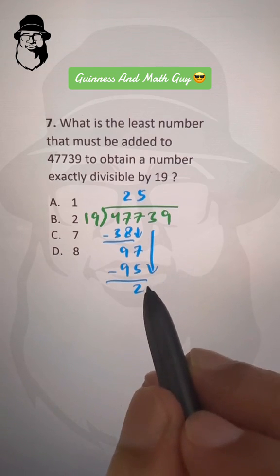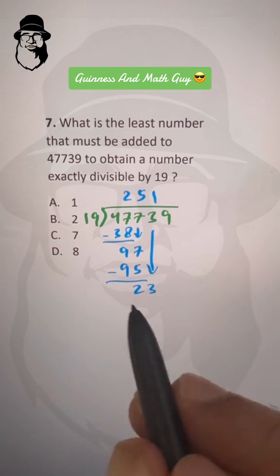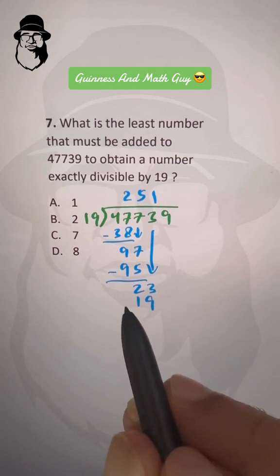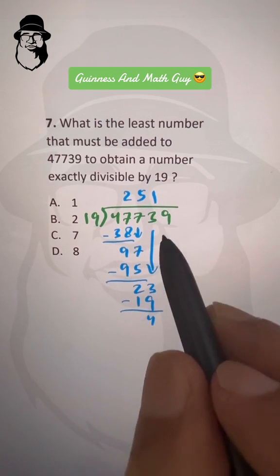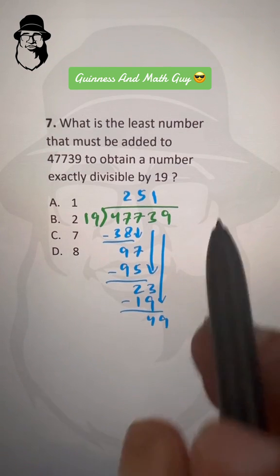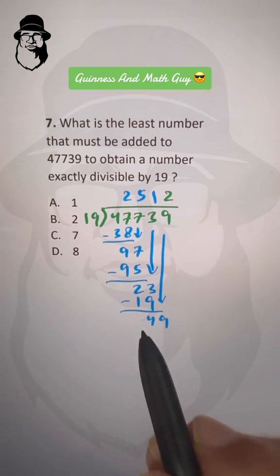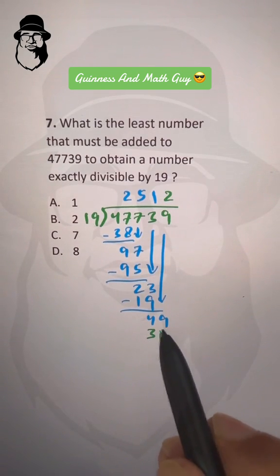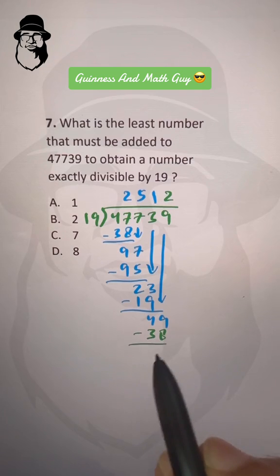Then bring down this 3. 19 times 1 is 19, and we have 4 here. Bring this down, 9. So 19 times 2 again is 38, and we have 11 here.